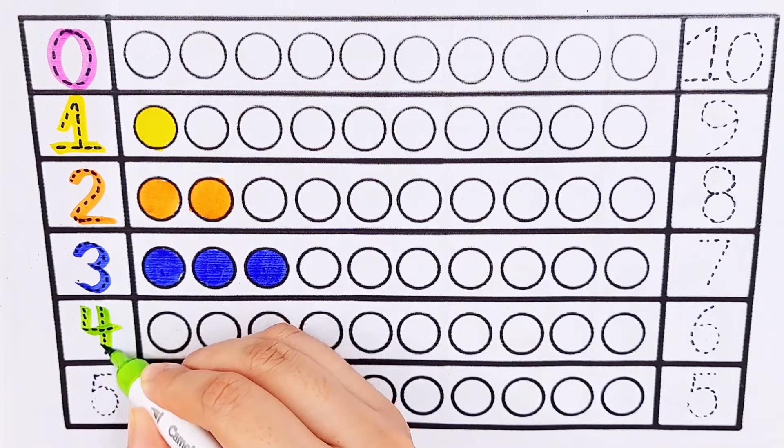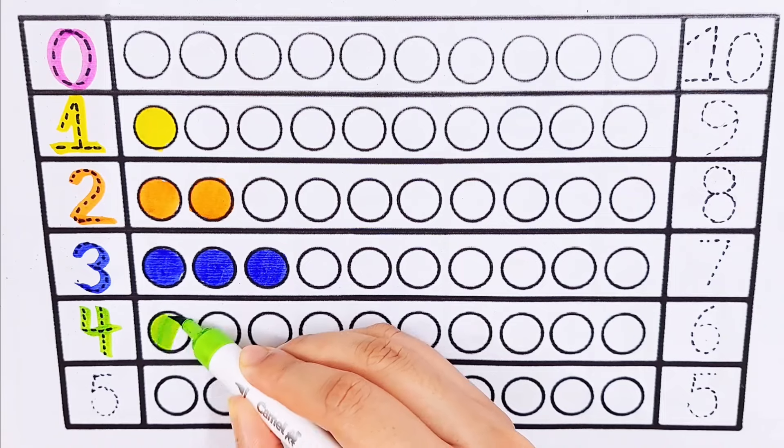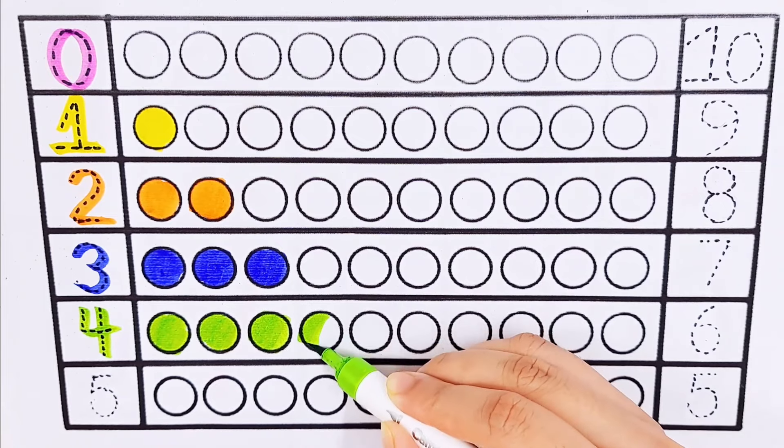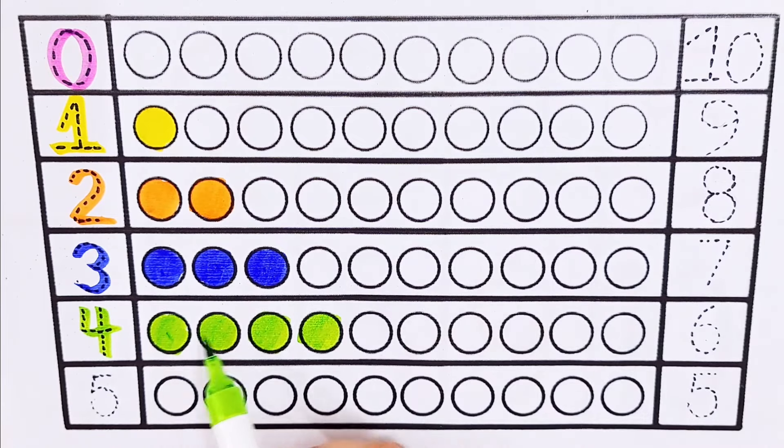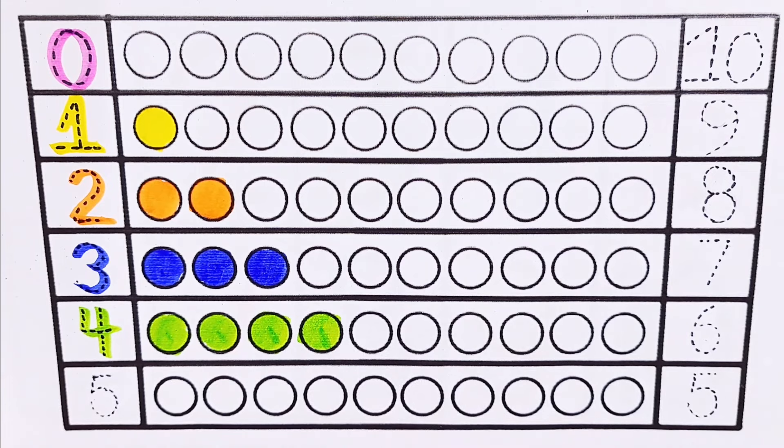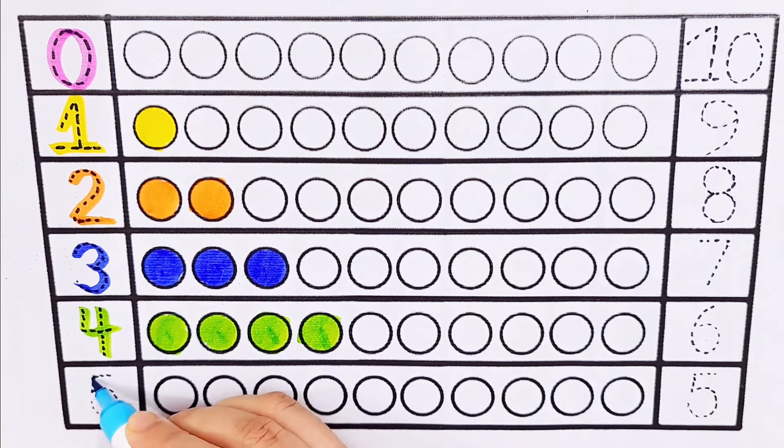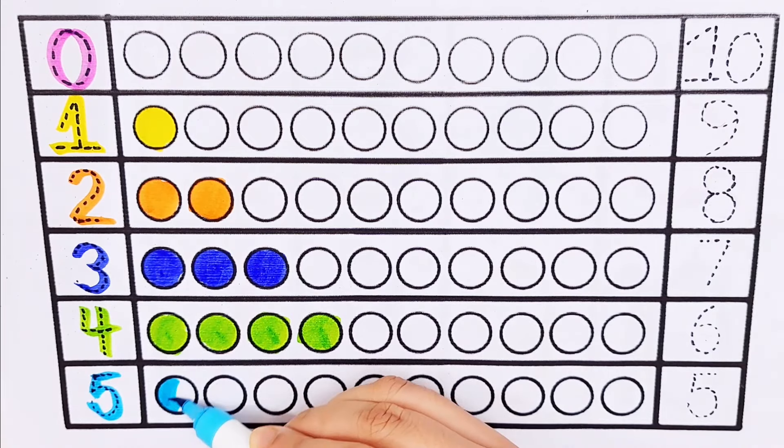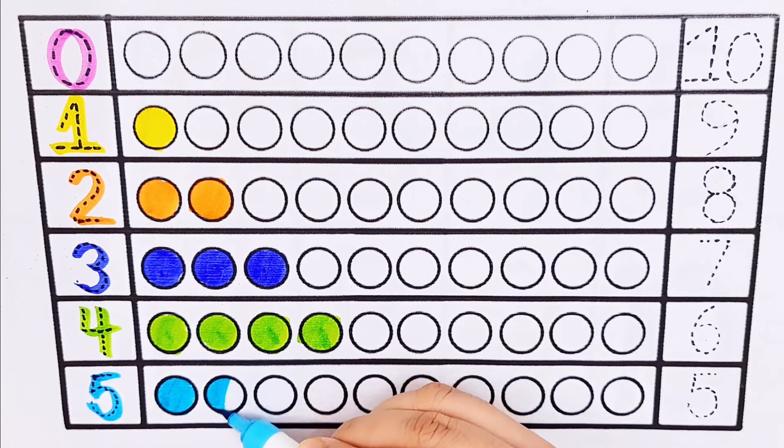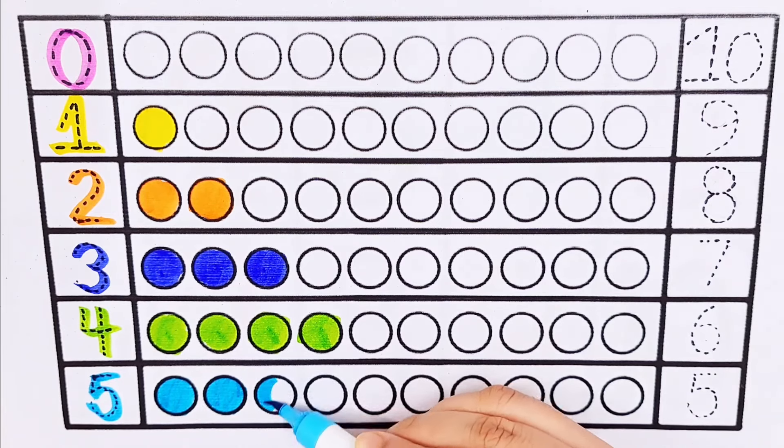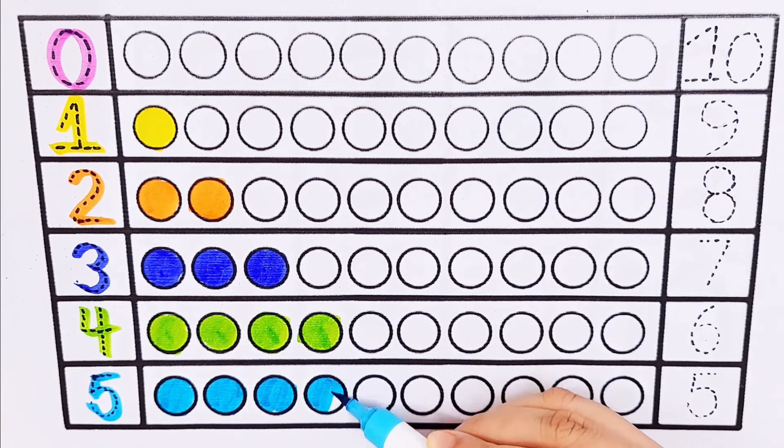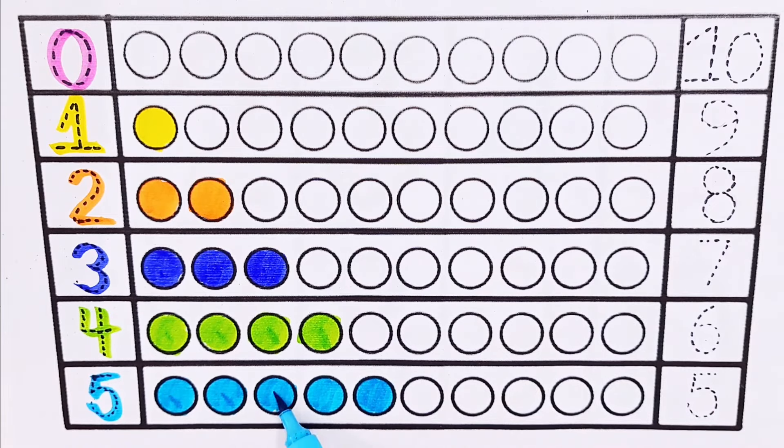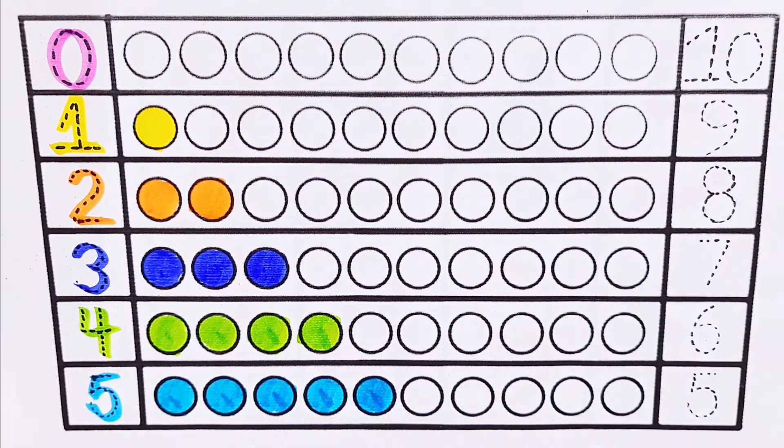Number 4: 1, 2, 3, 4. 4 balls. Number 5: 1, 2, 3, 4, 5. 5 balls.